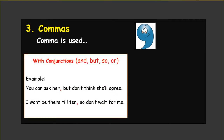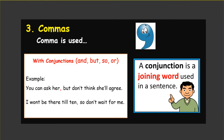Comma is also used with conjunctions. Are you familiar with conjunctions? A conjunction is a joining or connecting word used in a sentence. For example: 'You can ask her, but don't think she will agree.' The comma is placed just before the conjunction 'but.' Another example: 'I won't be there till 10, so don't wait for me.' So, a comma is also used with conjunctions.